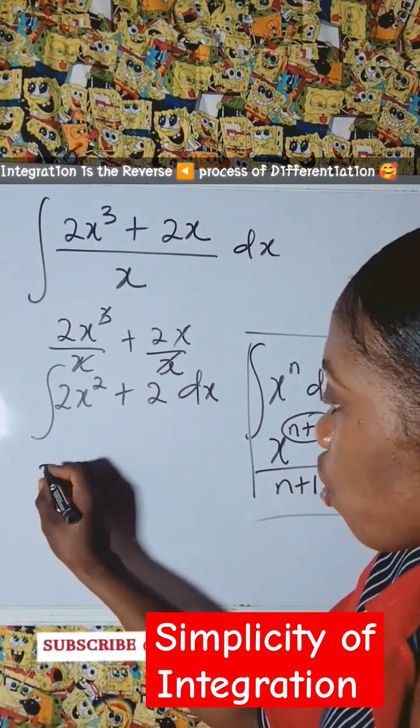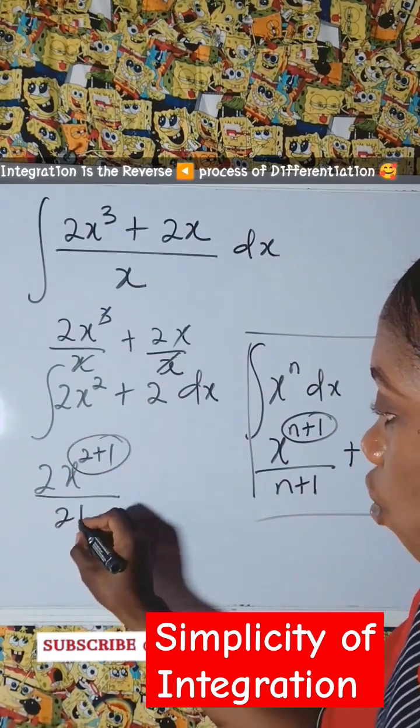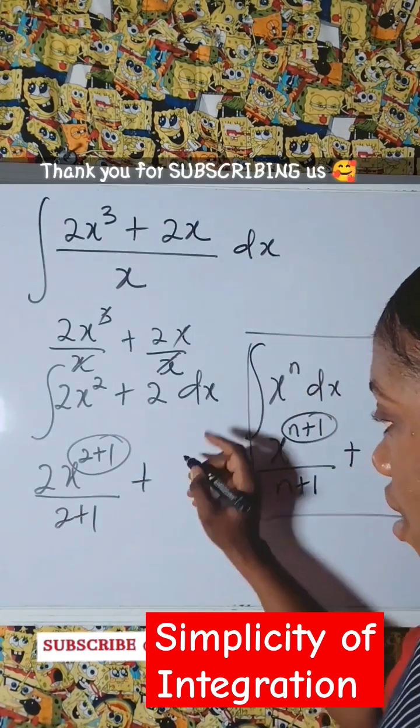So if you use it, we are going to have 2x raised to power 2 plus 1, over 2 plus 1, plus integrating the constant 2 with respect to x, which gives you 2x.